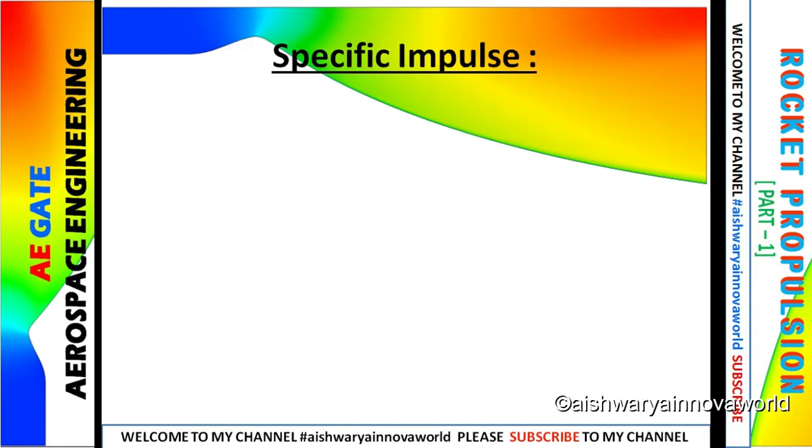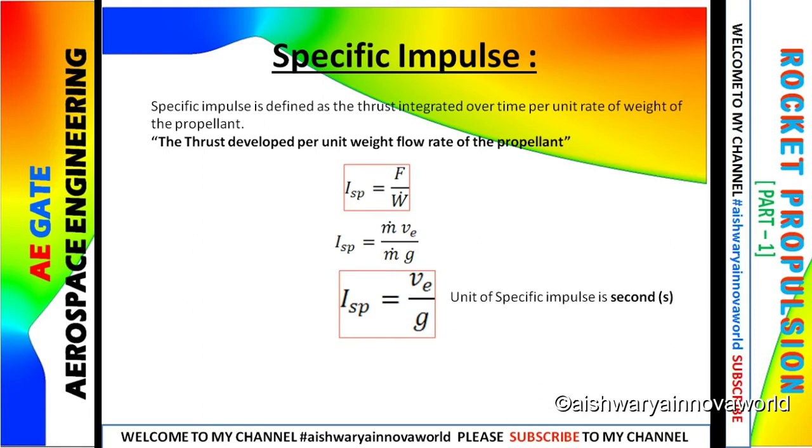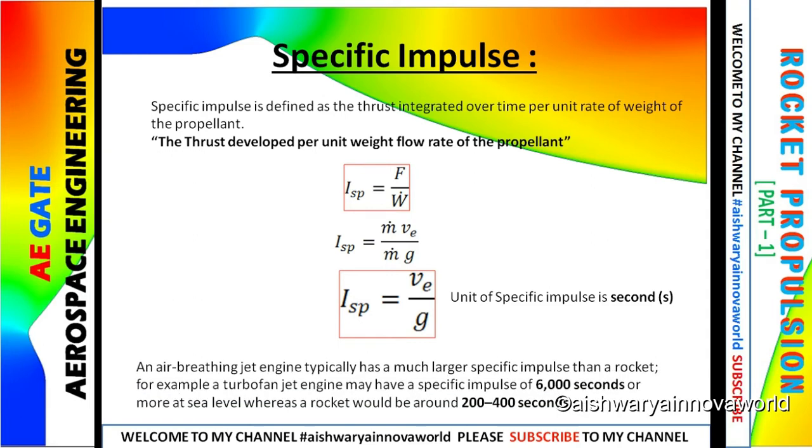Let's come to specific impulse. The definition of specific impulse is the thrust developed per unit weight flow rate of the propellant. So you can write that ISP equals to F by W dot, which can also be split as M dot VE divided by M dot into G. From here we can find the unit of specific impulse is second. You have to remember this point that air breathing jet engine has a larger specific impulse than rocket.